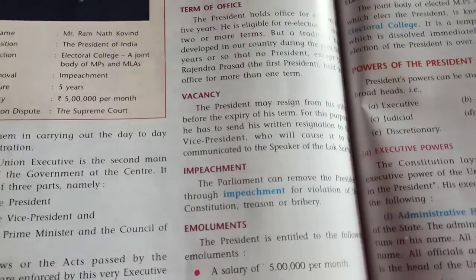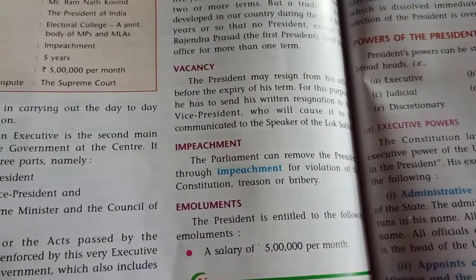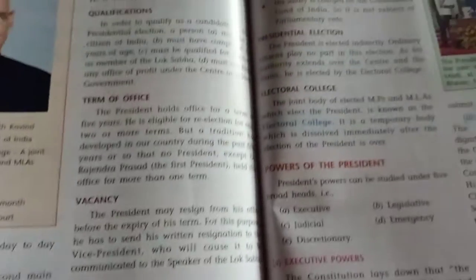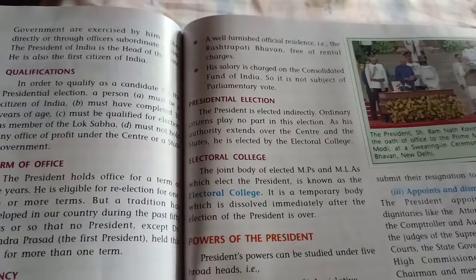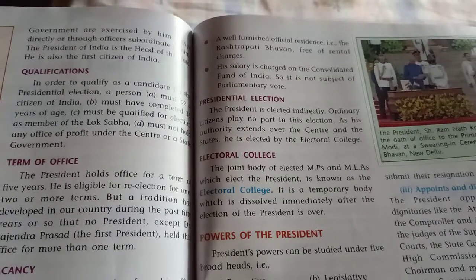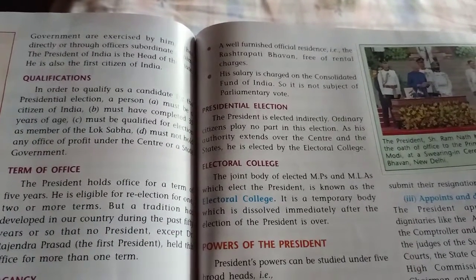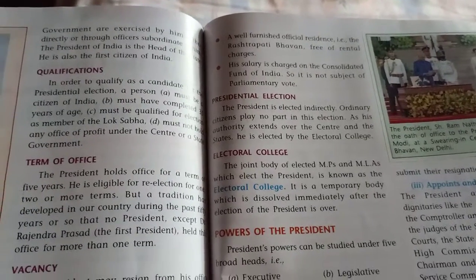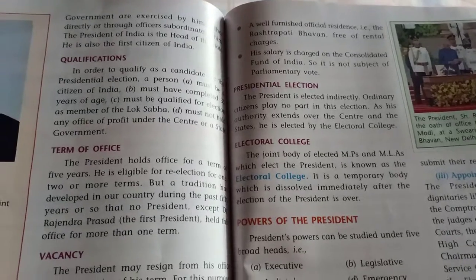Regarding emoluments: the president is entitled to a salary of five lakh per month, a well-furnished official residence — the Rashtrapati Bhavan — free of rental charges. His salary is charged on the Consolidated Fund of India, so it is not subject to parliamentary discussion or vote.